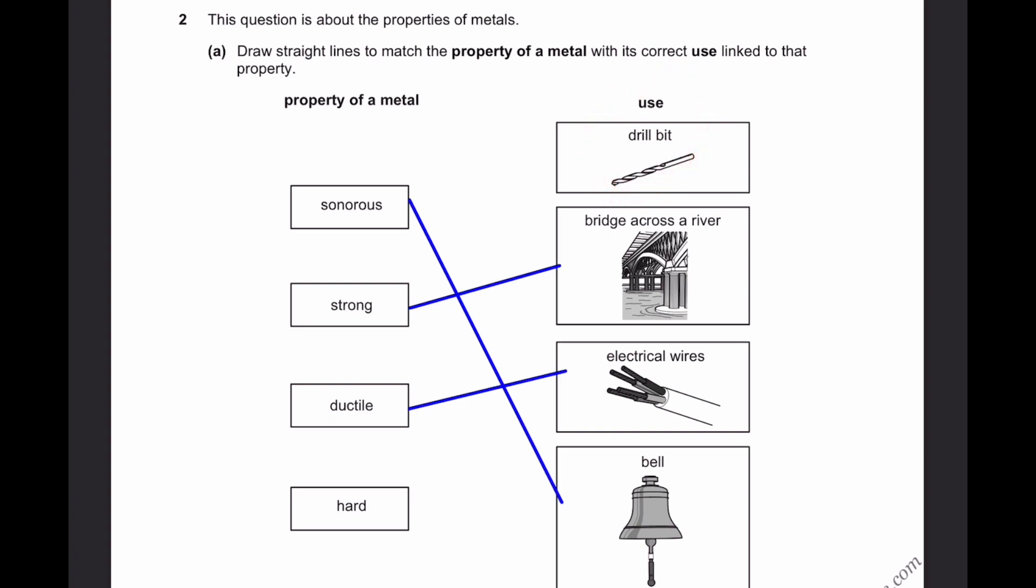Because even though your drill bit is not easy to break, you can't bend it. Like electric wires, you can bend it, but you can't break it so easily. That's called ductile. And for hard, a drill bit - you need to use it to drill into a cement wall and stuff. So it is quite hard.